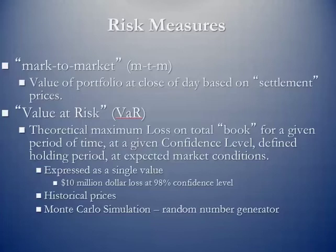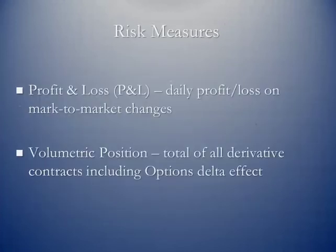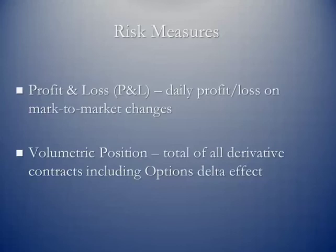Other risk measures: profit and loss. Once you've calculated the mark-to-market, you're going to have unrealized gains or losses. At the end of that day, the profit or loss total is going to be the mark-to-market value. Normally it becomes a cumulative number as you go through the month — the mark-to-market gain or loss on day one is added to the mark-to-market daily loss on day two, and so on. You have this running total.